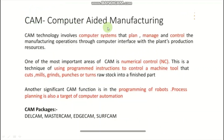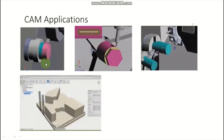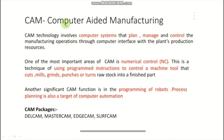Now what is CAM? CAM means Computer Aided Manufacturing. Here we prepare the DXF file or STEP file, and the CAM software converts that DXF or STEP file into G-code and M-code, with the help of a program to get the job completed with various tool operations. The tool operations include facing, turning, slotting, profile cutting, drilling, and milling. The CAM packages include Delcam, MasterCAM, EdgeCAM, and SurfCAM. CAM technology involves the computer system that plans, manages, and controls the manufacturing operation through the computer interface with the plant production resources.